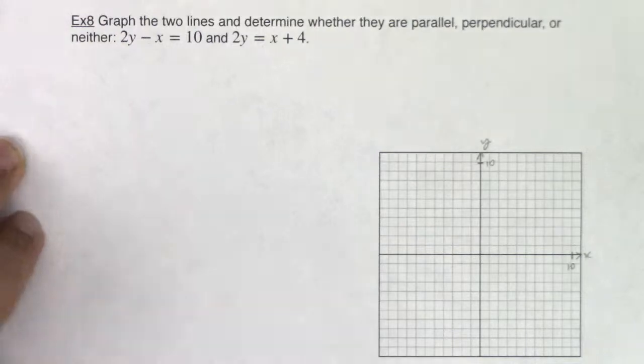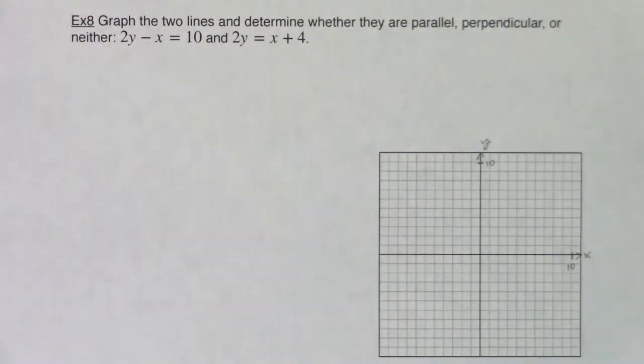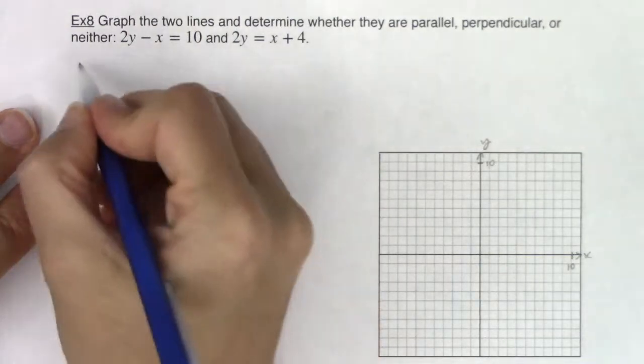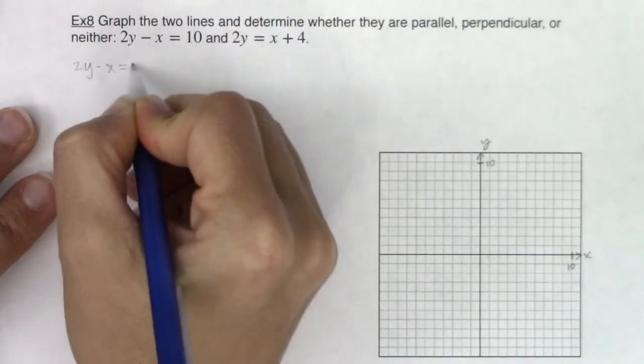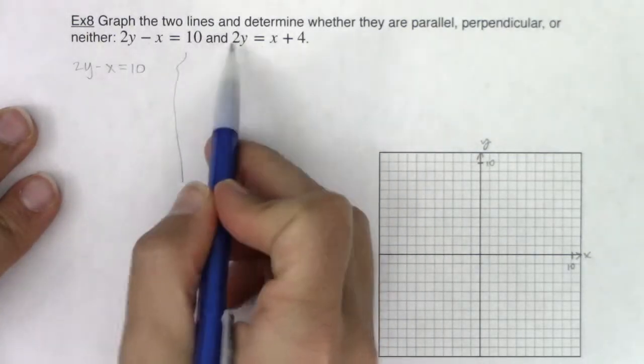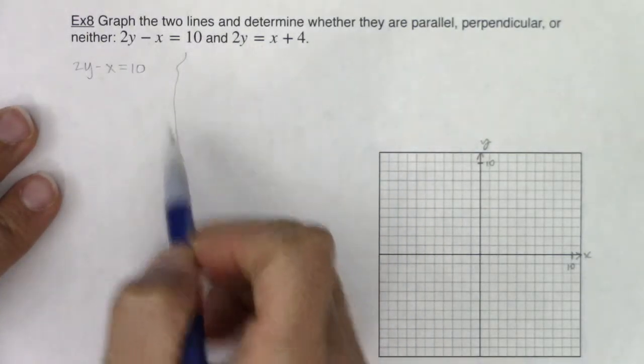Now for me personally, when I go to graph lines, I like them to be in slope intercept form. So for both of these lines, let me get them into slope intercept form. I'm going to work this line first. I'll work 2y minus x equaling 10, and then I'll come over here and do this one.